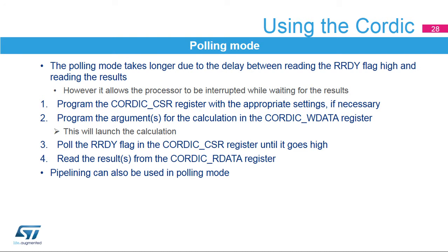The sequence described in this slide summarizes the use of the Cordic IP in polling mode. When a new result is available in the Cordic R data register, the RRDY flag is set in the Cordic CSR register. The flag can be polled by reading this register; it is reset by reading the Cordic R data register once or twice depending on the NRES field. Polling the RRDY flag takes slightly longer than reading the Cordic R data register directly. However, the processor and bus interface are not stalled while reading the Cordic CSR register, so this mode may be of interest if stalling the processor is not acceptable — for instance when low latency interrupts must be serviced.